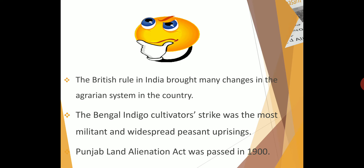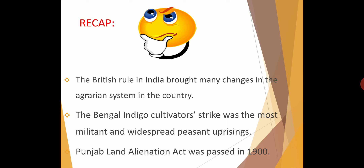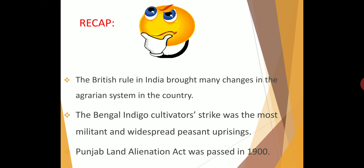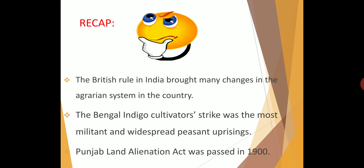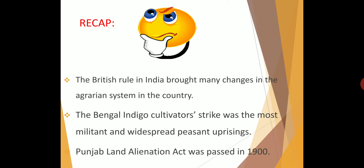To recap: British rule in India brought many changes to the agrarian system. Changes included the land revenue policies — Permanent Settlement, Raithwari system, and Mahalwari system. The Indigo cultivators' revolt was the most militant, spread to most places, and was finally controlled by Indigo Act 6. The Punjab Revolt was controlled by the Punjab Land Alienation Act in 1900.